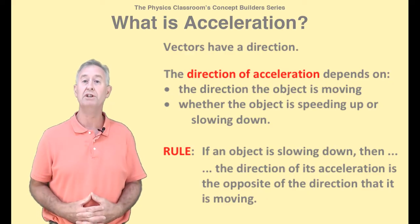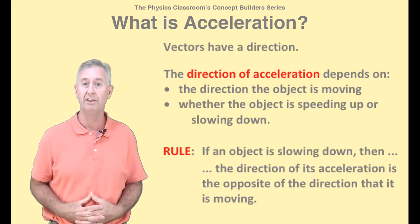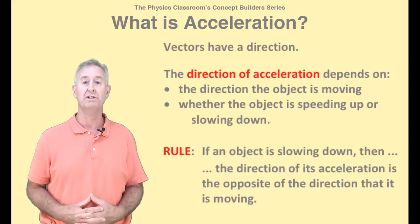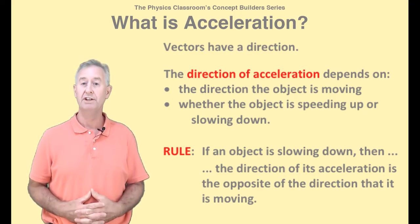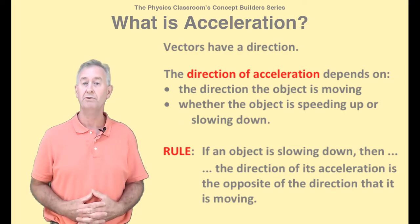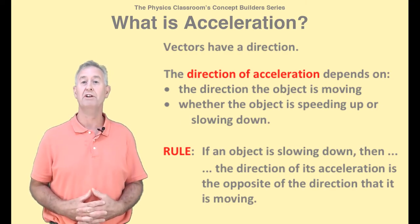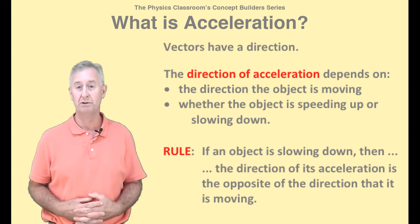So, for instance, if an object is moving north and slowing down, then the direction of its acceleration is south. What happens if an object is moving north and speeding up? Then the direction of its acceleration is north, because for a speeding up object, the direction of the acceleration is equal to the direction that it is moving.